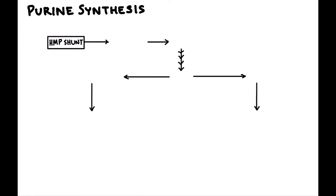As you can see here in this box, it says HMP shunt — the hexose monophosphate shunt pathway. This pathway gives us ribose-5-phosphate, or R5P. Ribose-5-phosphate combines with ATP and gives us a very important product called PRPP, which stands for phosphoribosylpyrophosphate. Just remember PRPP.